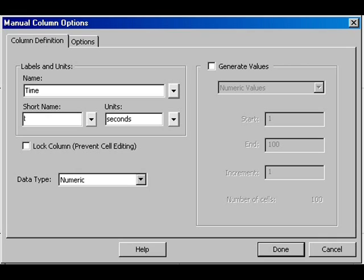In this case, name is vertical position, short name, lowercase y, since X and Y are the conventional symbols for horizontal and vertical displacement in physics, and units would be meters. The result of both sets of labeling is shown.